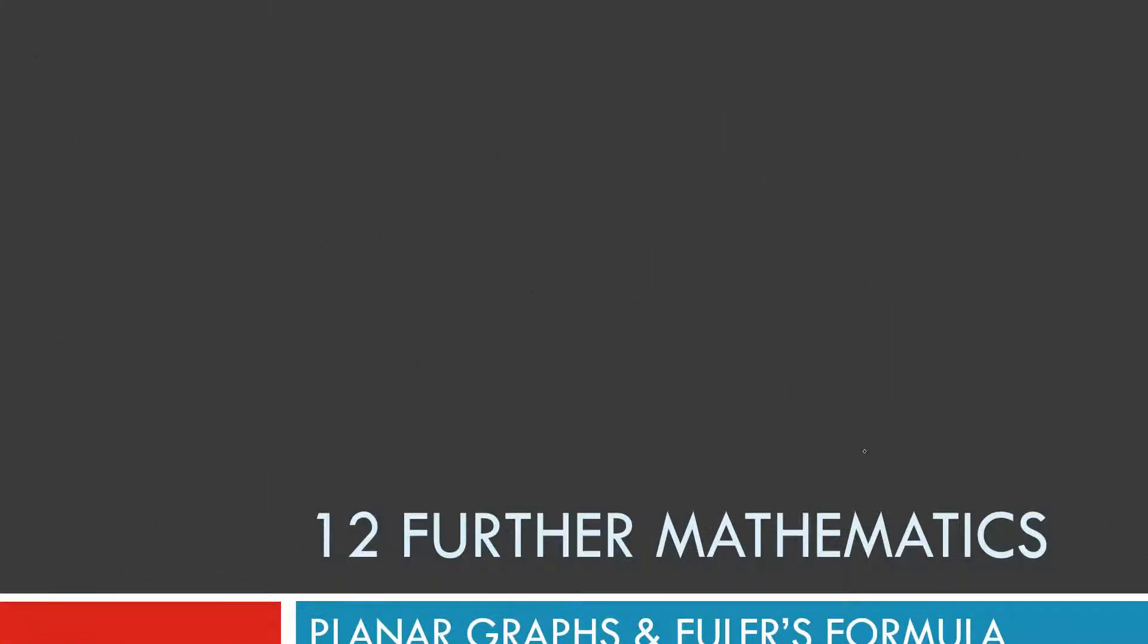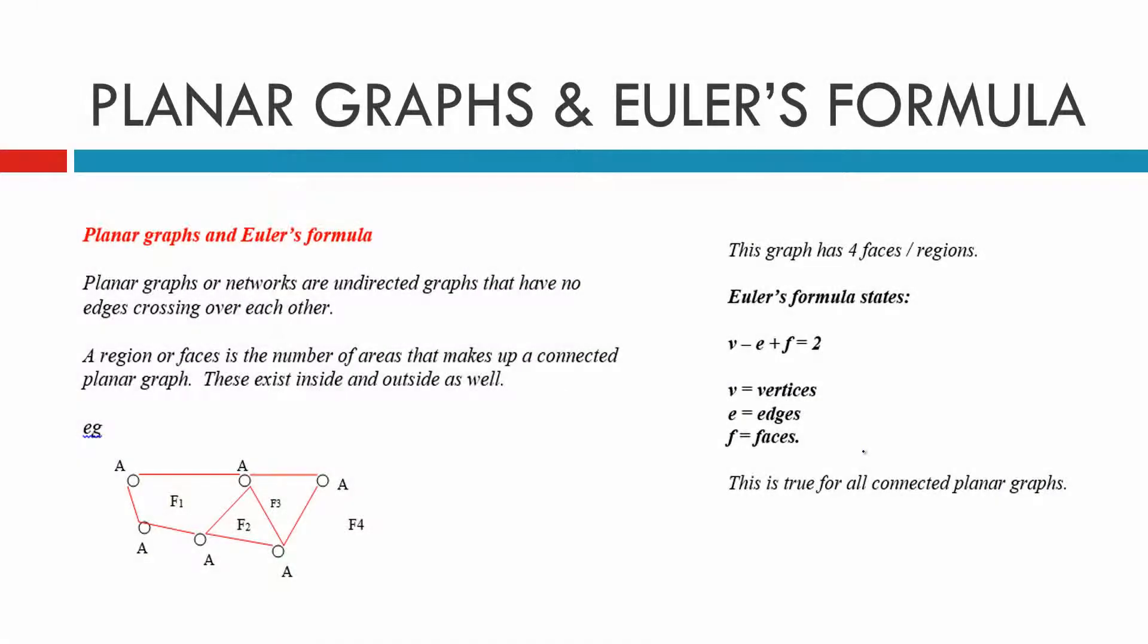Planar graphs and Euler's formula. That's what we started today. Planar graphs or networks are just undirected graphs, just like we did in the first exercise. There's no edges that cross over each other. So if we've got an edge that crosses over, we have to be able to draw them where they don't cross over. That's very important.